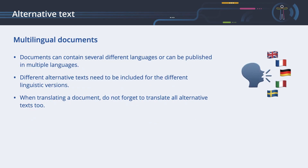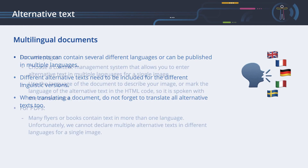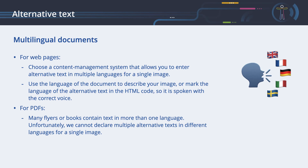Documents can contain several different languages or can be published in multiple languages. Different alternative texts need to be included for the different linguistic versions. When translating a document, do not forget to translate all alternative texts too. For web pages, choose a content management system that allows you to enter alternative text in multiple languages for a single image. Otherwise, you will have to upload and maintain the same image multiple times for every language. Use the language of the document to describe your image, or mark the language of the alternative text in the HTML code so it is spoken with the correct voice.